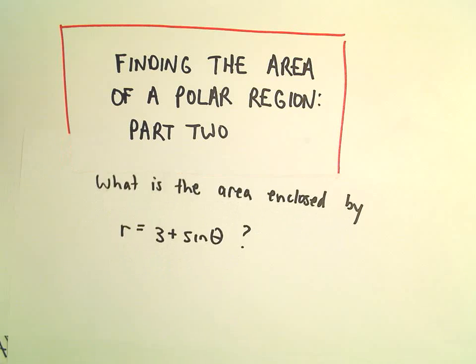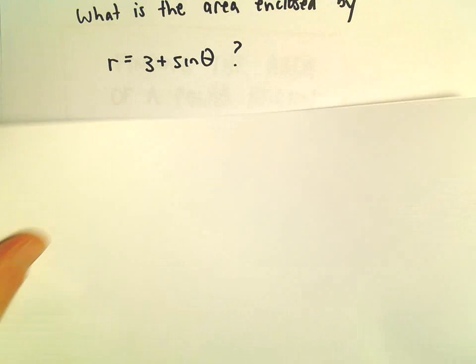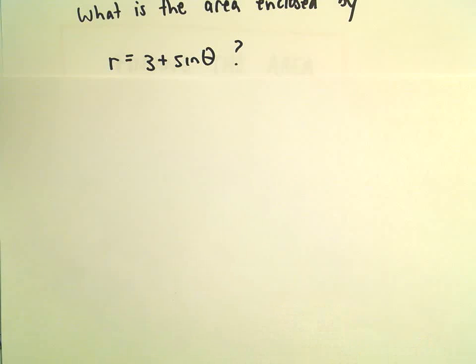All right, here we're going to find the area enclosed by the polar curve r equals 3 plus sine theta.